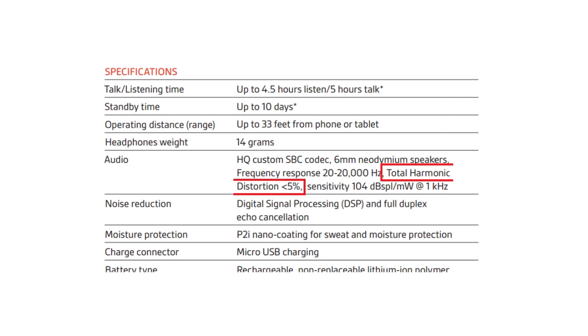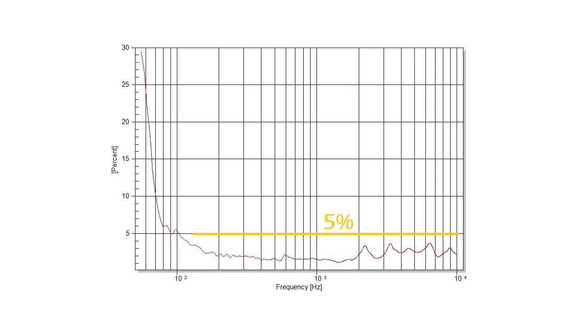Just like in frequency response, sometimes you will only find a number for the total harmonic distortion. This indicates that the total harmonic distortion in most of the audible spectrum will be lower than that quantity. I say most because it is very common to have high distortion at low frequencies.